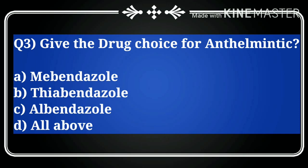Question number three: give the drug of choice for anthelmintics. Which drug can be used for treatment from the given options? Option A is mebendazole, B is thiabendazole, C is albendazole, and D is all of the above. Since all three drugs — mebendazole, thiabendazole, and albendazole — are correct, our answer is D, all of the above.